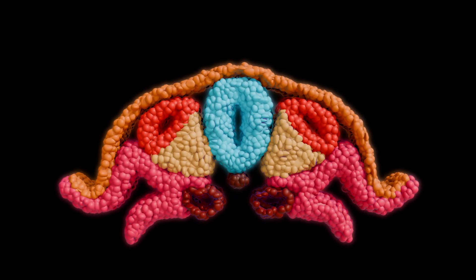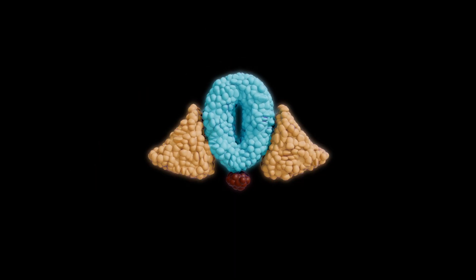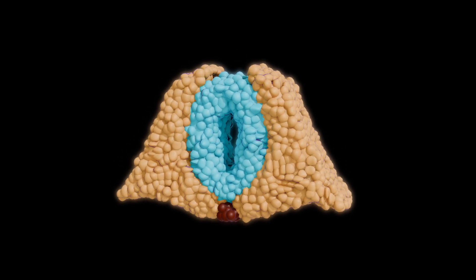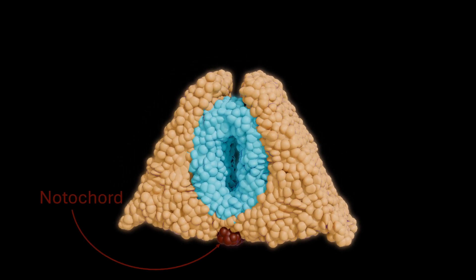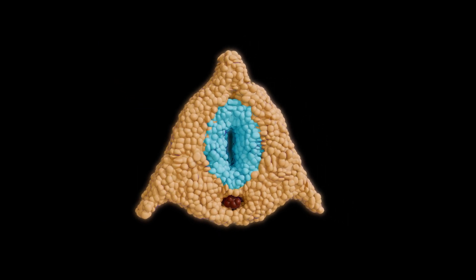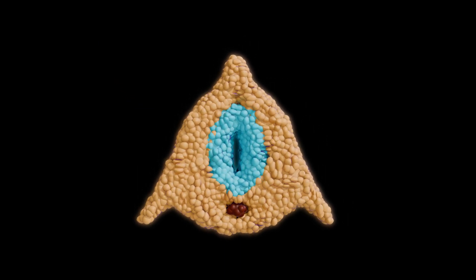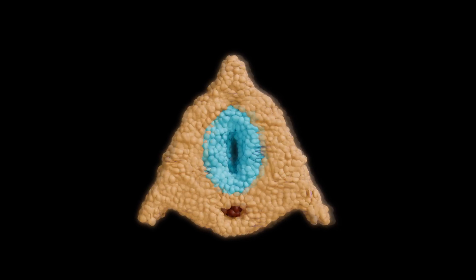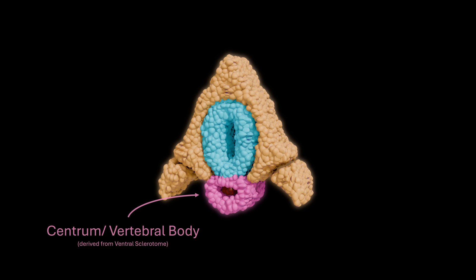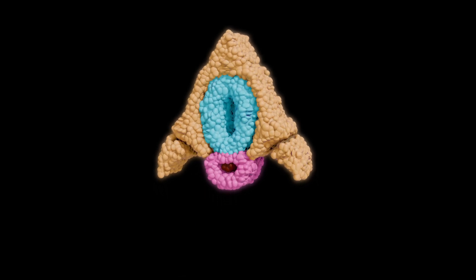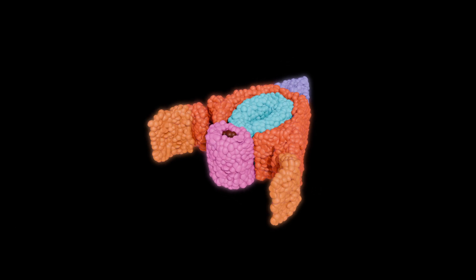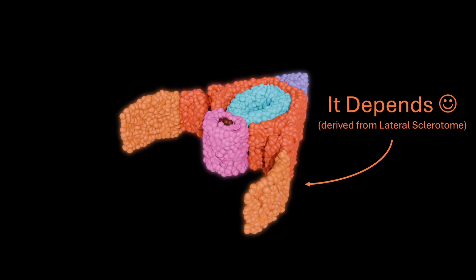By the fourth week, sclerotome cells begin migrating inward. They stream toward the midline and wrap themselves around two anchor points: the notochord in front and the neural tube just behind it. This organized condensation gives rise to three regions. Ventrally, the sclerotome surrounds the notochord to form the centrum, or vertebral body. Dorsally, other cells arch around the neural tube to create the vertebral arch. And laterally, small buds extend outward as costal processes.